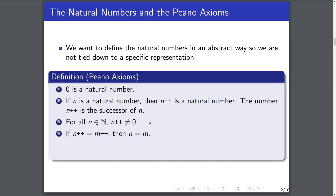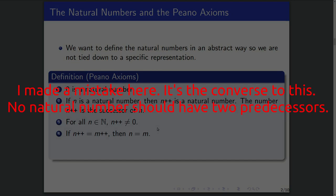The fourth axiom says that if n++ equals m++, then it must be the case that n actually equals m. This is really just saying that the successor function is injective, which makes sense — one natural number shouldn't have two successors.